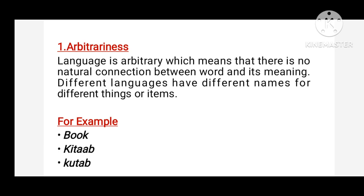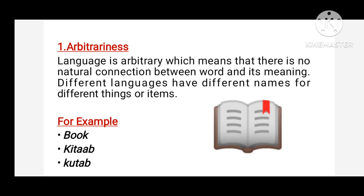The first property of language is arbitrariness. Arbitrariness refers to the fact that there is no natural connection between a word and its meaning — yani ki ek object aur us ki meaning ka apas mein koi bhi relationship nahi hai. Different languages have different names for the same thing or item. For example, we have an object that is a book.